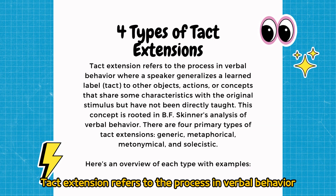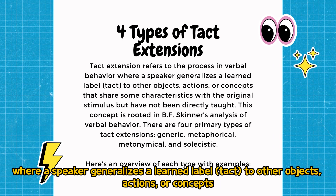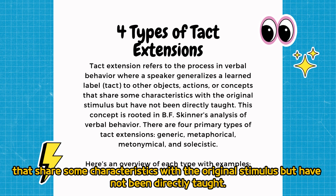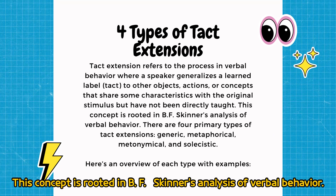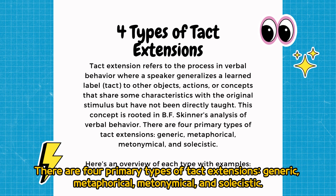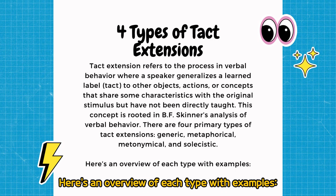Tact extension refers to the process in verbal behavior where a speaker generalizes a learned labeled tact to other objects, actions, or concepts that share some characteristics with the original stimulus but have not been directly taught. This concept is rooted in B.F. Skinner's analysis of verbal behavior. There are four primary types of tact extensions: generic, metaphorical, metonymical, and solacistic. Here's an overview of each type with examples.